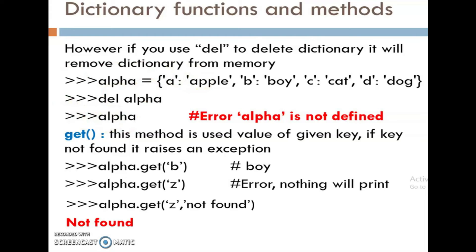When we are using this del statement, it will remove the dictionary from the memory itself. Then if we are using alpha for printing the values, that time it will produce an error: alpha is not defined. When we use del, it removes the dictionary from the memory itself, so it will produce an error.